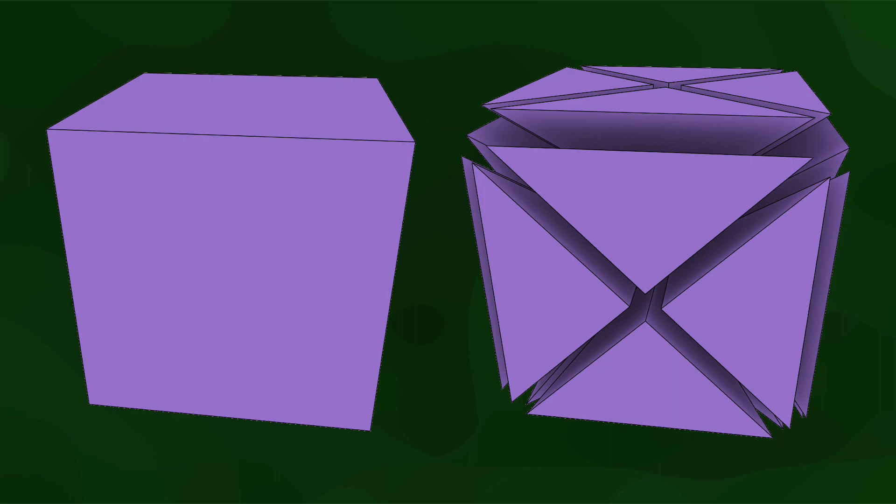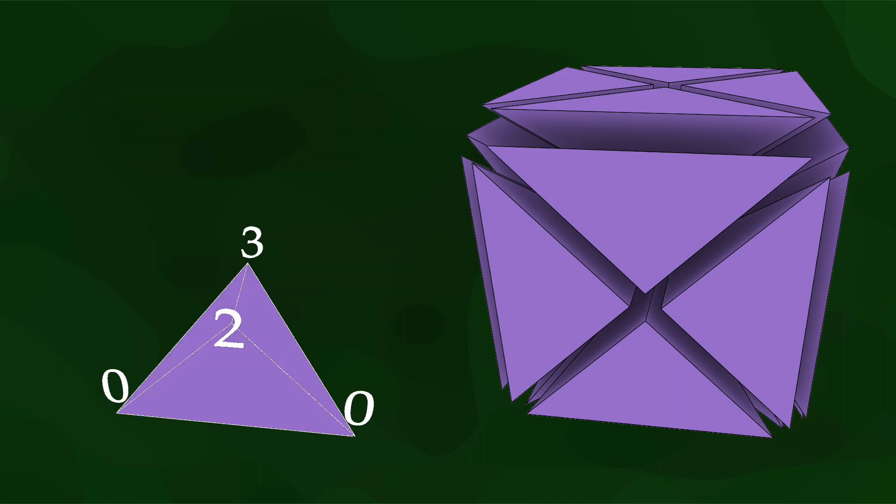After triangulating every face, we do a barycentric triangulation of every volume. For this, we add a new vertex in the barycenter of the volume, then connect it to every existing triangular face, which creates a tetrahedra. If we assign the volume barycenter vertex a number 3, we can see the pattern.